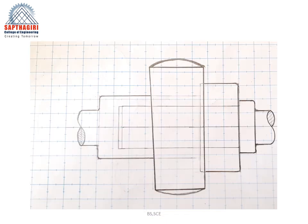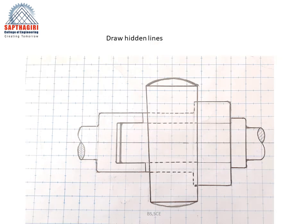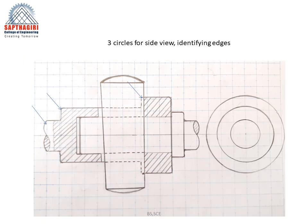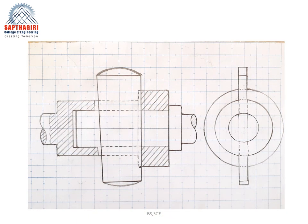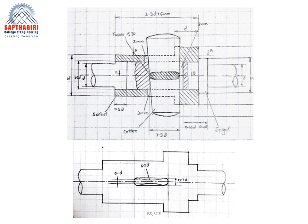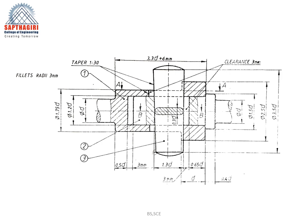Fillets can be represented with approximately 3 mm radius. Draw the hidden lines and complete the fillets on all corners wherever necessary, then complete the hatching. If a side view is asked, identify the three diameters where three circles can be drawn directly for the side view of the cotter. The final answer is to be represented with respect to proportions only. Thank you.